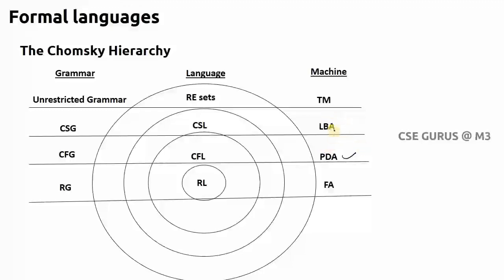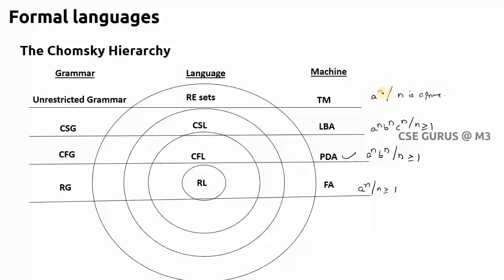For finite automata, the language is a^n (n ≥ 1). For pushdown automata (PDA), you can solve a^n b^n. For linear bounded automata (LBA), you can solve a^n b^n c^n. For Turing machines, you can solve problems like a^n where n is a prime number. So in the Chomsky hierarchy, the inner circle machine is less powerful compared to the outer circle machine.